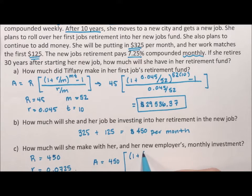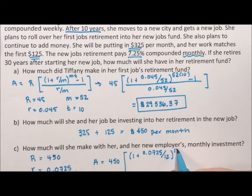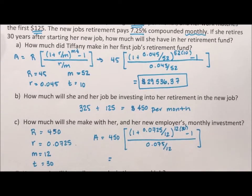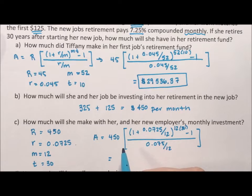...times 1 plus 0.0725 divided by 12 to the 12 times 30, minus 1, divided by 0.0725 divided by 12. We throw this into our calculator - make sure you practice putting these into your calculator. The biggest mistake I see is it's really hard to manage all of these parentheses and these exponents. So we throw all of this into our calculator and we find out that the annuity in her second job brings her total at the second job, putting in more money for more years, $576,851.98, which is awesome.